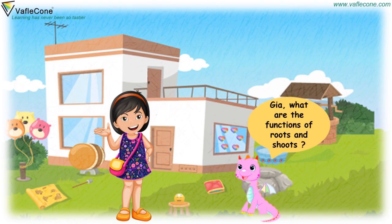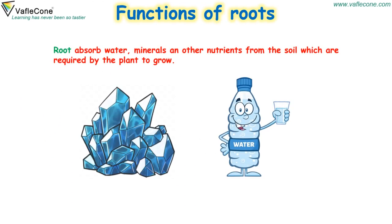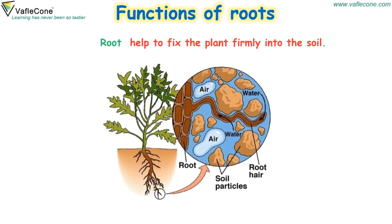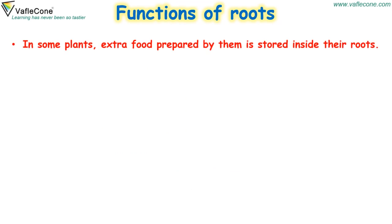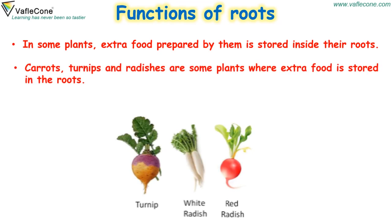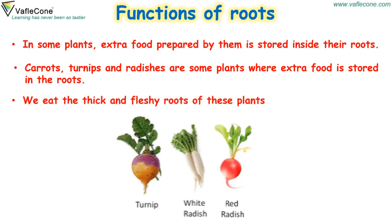What are the functions of roots and shoots? Functions of roots: Roots absorb water, minerals and other nutrients from the soil which are required by the plants to grow. Roots help to fix the plant firmly into the soil. In some plants, extra food prepared by them is stored inside their roots. Carrots, turnips and radishes are some plants where extra food is stored in the roots. We eat the thick and fleshy roots of these plants.